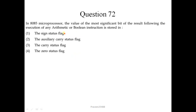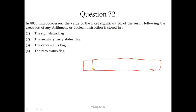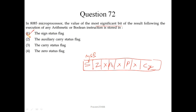Question number 72. In the 8085 microprocessor, the most significant bit of the result following the execution of any arithmetic or boolean instruction is stored in the sign flag. The 8-bit flag register has, from MSB to LSB: sign flag, zero flag, (undefined), auxiliary carry flag, (undefined), parity flag, (undefined), and carry flag. There are 5 defined flags, and the MSB is the sign flag. So the sign flag is the correct option.